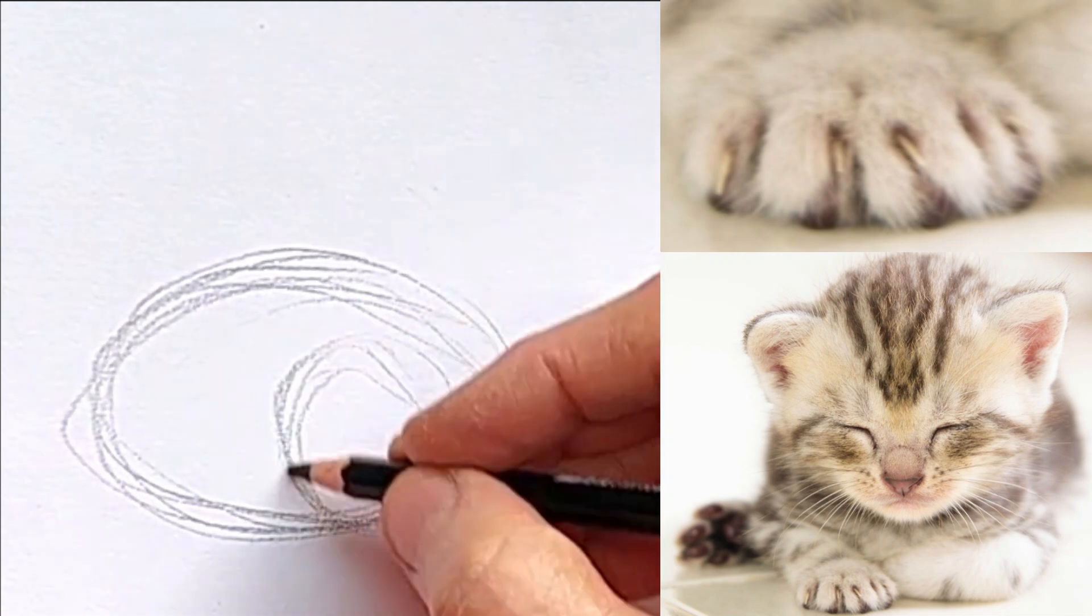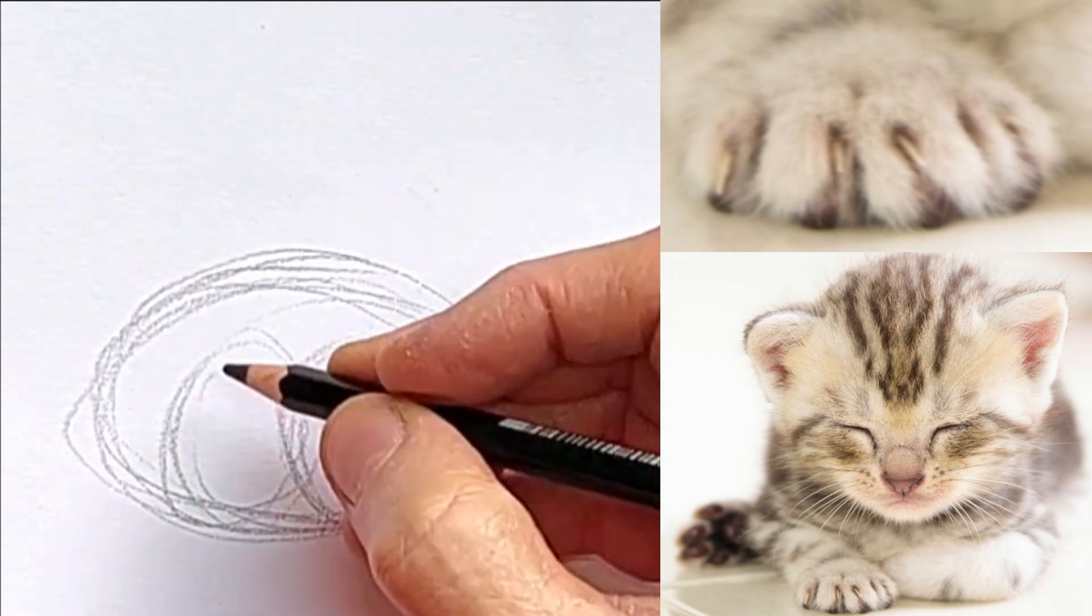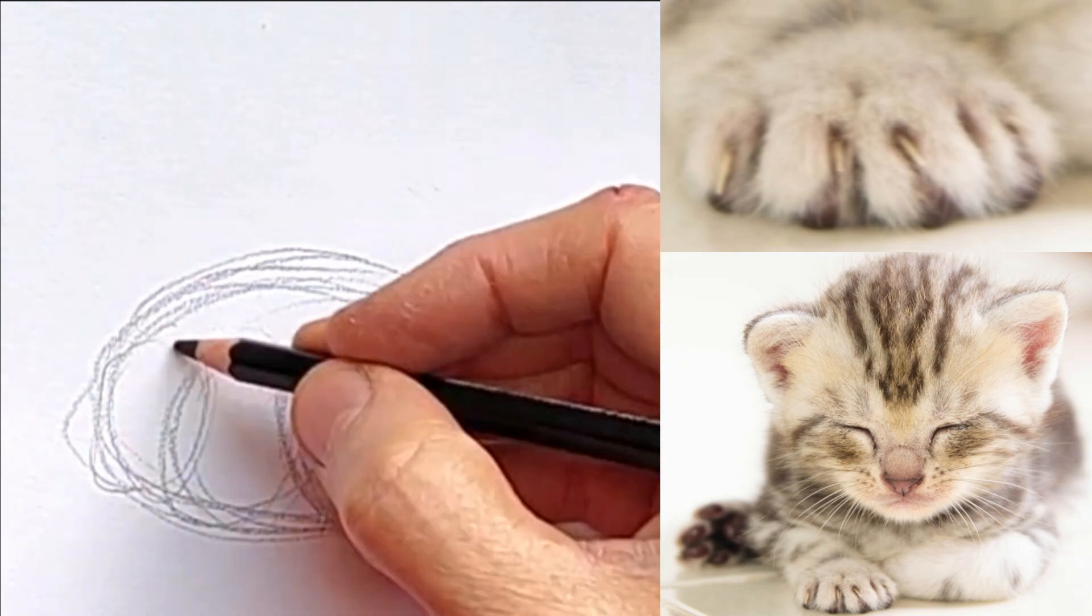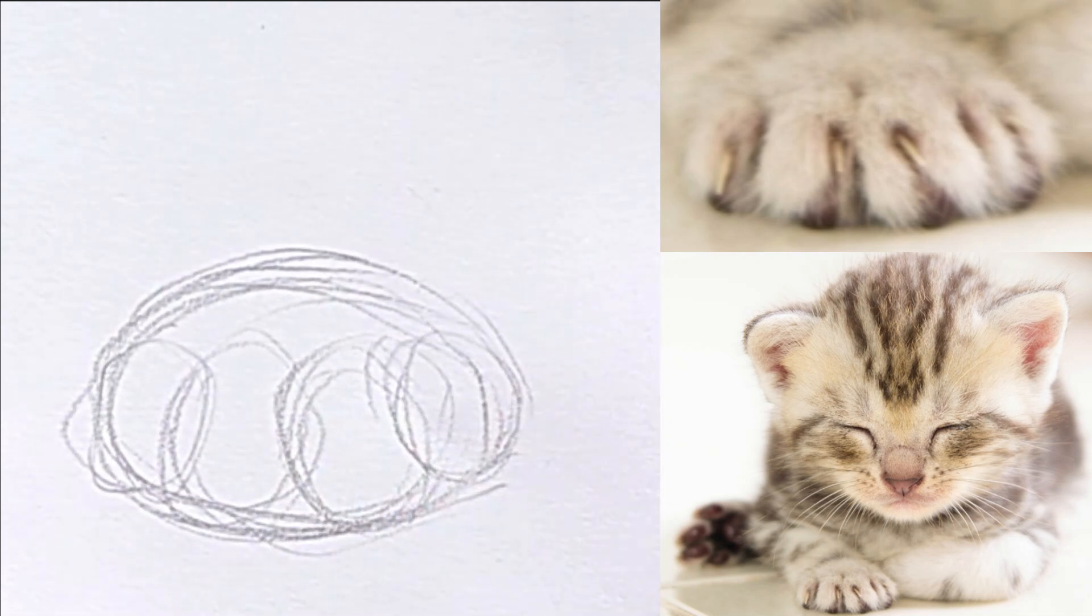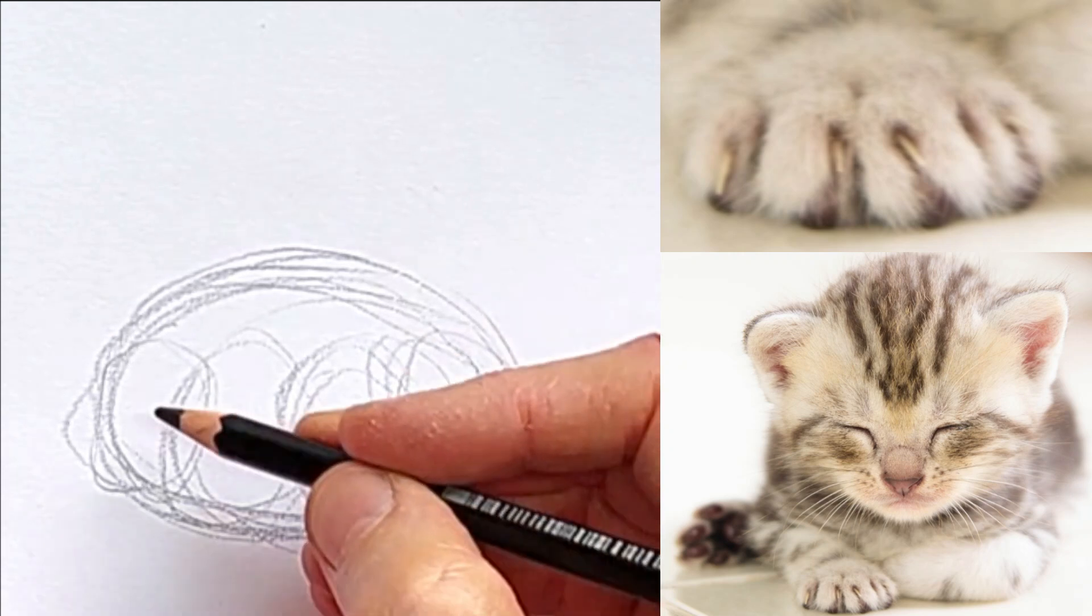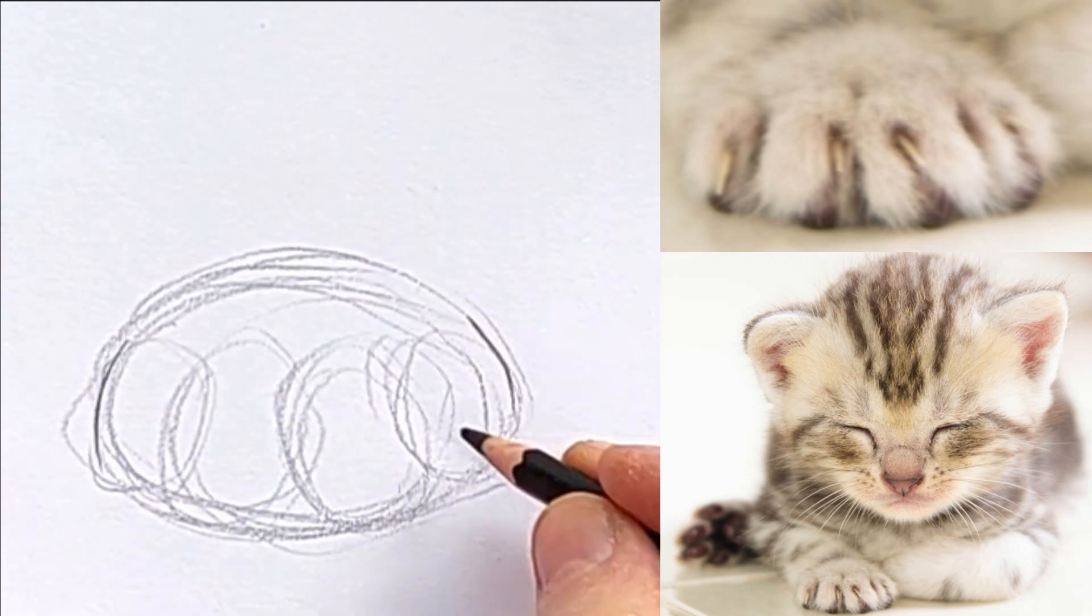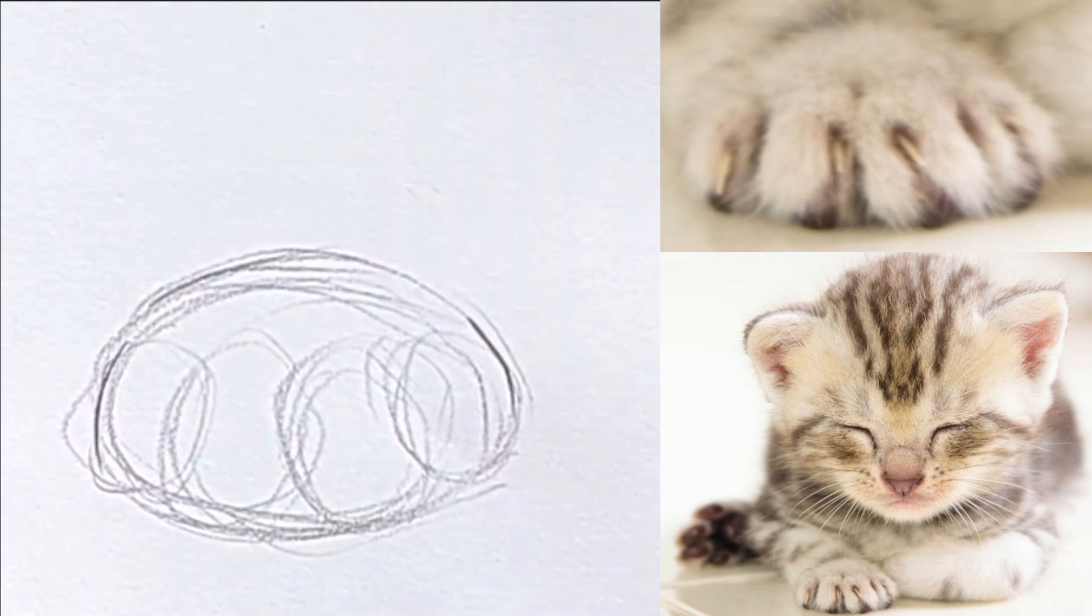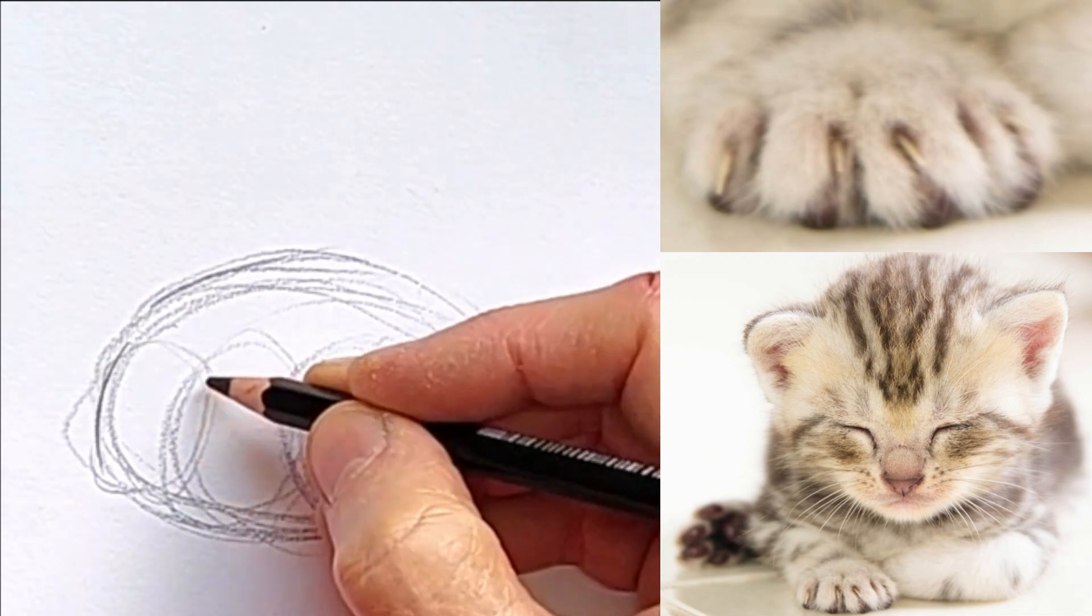I'm just kind of feeling out the shapes where the toes would be. And of course they overlap a little. I just want to proceed cautiously here because I just want the lines that are important. I don't want too much extra background noise.